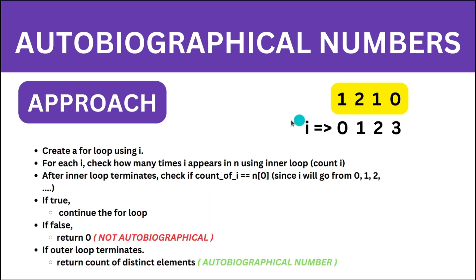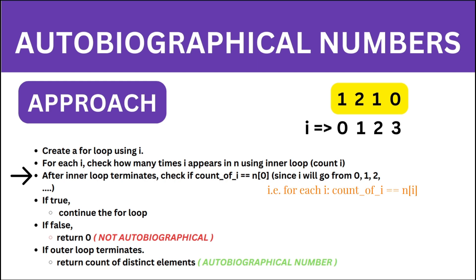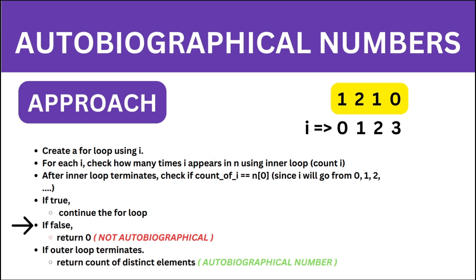Now let's discuss the approach. We will create a for loop using variable i. Inside it, we create an inner for loop to check how many times i appears in the number. After the inner loop terminates, we check if the count of i equals the digit at index i. If i is 0 and the count of 0 is 1, we check that against the digit at index 0. Since i ranges from 0 to length minus 1, every value of i corresponds directly to its digit. If the count doesn't match, we return 0. If the outer loop completes successfully, the number is autobiographical and we count distinct elements and return that count.